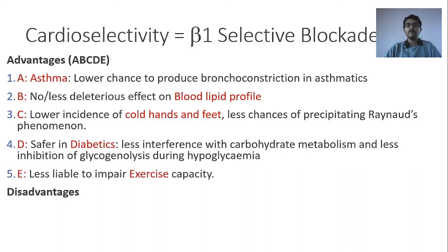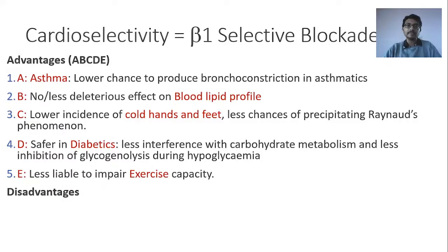E is for exercise. Beta-2 receptors are located on blood vessels supplying skeletal muscles. Non-selective beta-blockers cause vasoconstriction in those vessels due to beta-2 receptor blockade, leading to decreased blood supply to skeletal muscles and reduced exercise capacity. Cardioselective beta-blockers do not cause this problem. So the five advantages are: A — safer in asthmatics; B — less harmful effect on blood lipid profile; C — lower incidence of cold hands and feet, less chance of precipitating Raynaud's syndrome; D — safer in diabetics; E — less liable to impair exercise capacity.